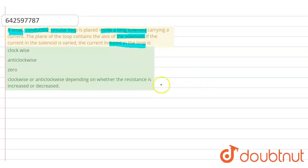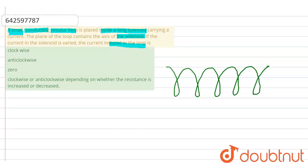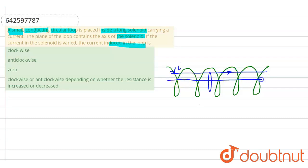First of all, I am going to draw a long solenoid like this. This is the long solenoid and I am going to place a loop inside the solenoid like this. Now, if there is a current I, then for a long solenoid, the magnetic field lines will be like this.